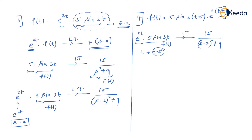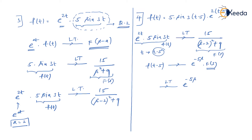Replacing every t with t minus 5 gives f of t minus 5. Using the time delay property, we write e^(−5s) times F(s), where F(s) is 15 upon (s − 2)² plus 9. So the final Laplace transform for question 4 is e^(−5s) times 15 upon (s − 2)² plus 9.